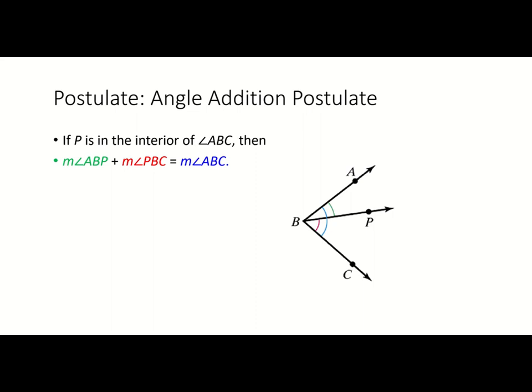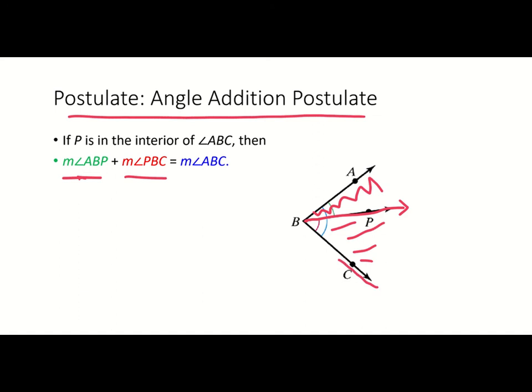Next we have our last postulate for this section: the angle addition postulate. It's very similar to the segment addition postulate. Basically, if we have point P on the interior of angle ABC, and ray BP divides the large angle into two smaller angles, then the measure of angle ABP plus the measure of angle PBC equals the measure of the entire large angle ABC.